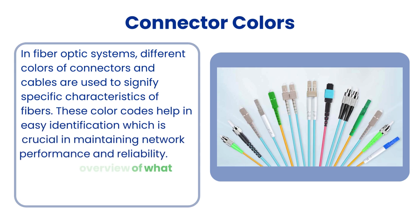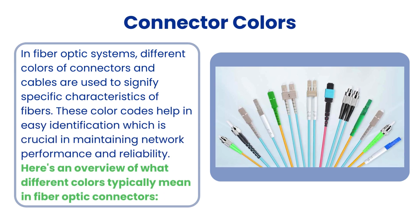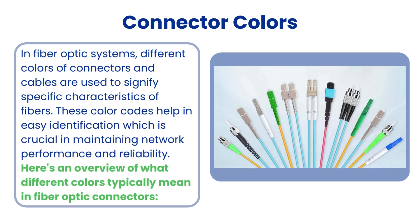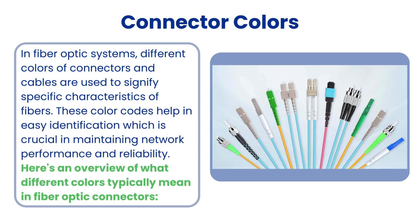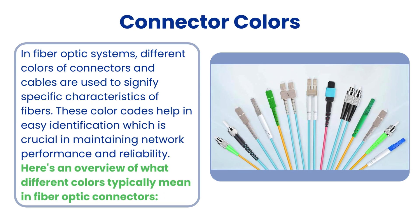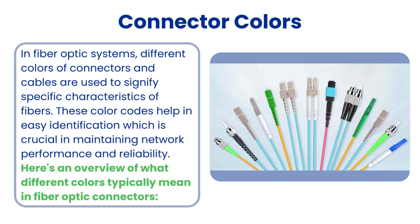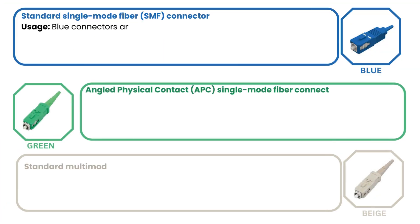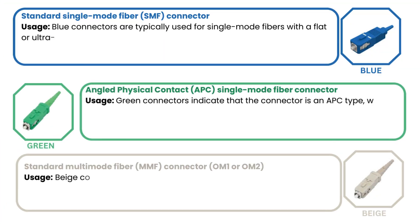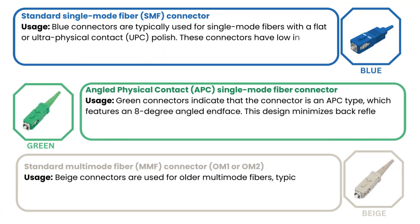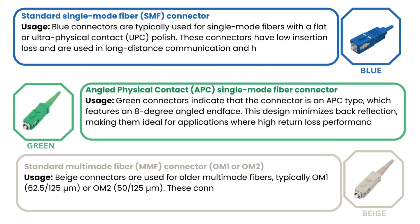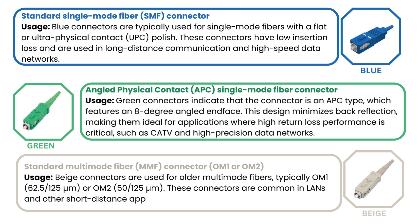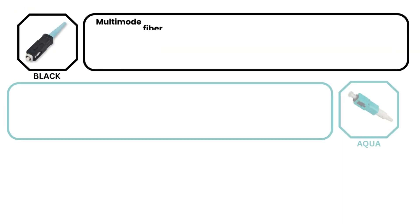In fiber-optic systems, different colors of connectors and cables are used to signify specific characteristics of fibers. These color codes help in easy identification, which is crucial in maintaining network performance and reliability.